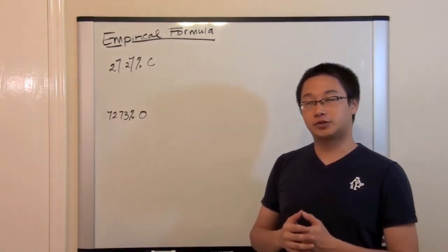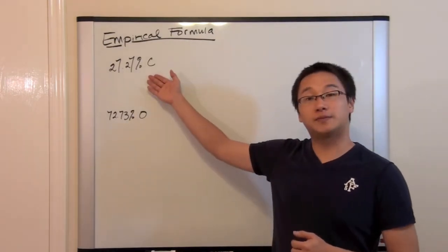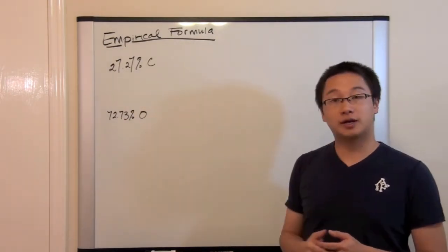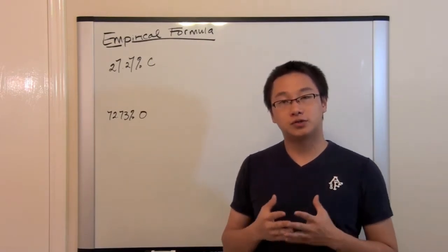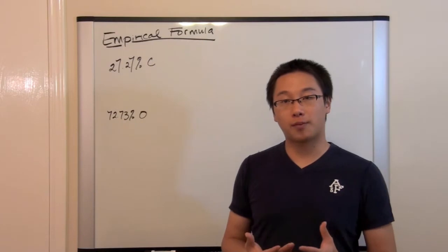So we have two percent composition. One is the percent composition of the carbon, the other is the percent composition of the oxygen. So how are we going to make use of these two percentages and find out the chemical formula?